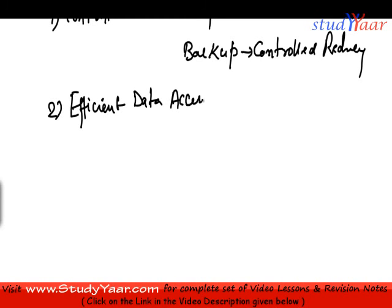The next advantage is efficient data access and data isolation. Since data is centralized, it is totally isolated. In databases, we have different access mechanisms that allow us to access data very quickly. I don't have to go through the entire file to search for a specific data item. I can use a construct called indexes, which help me to pinpoint a particular record instantly. All such features available in DBMS allow us to access data efficiently and quickly.